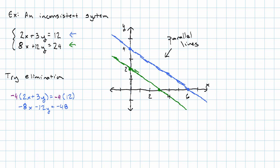So, our system is now negative 8x minus 12y is negative 48. Positive 8x plus 12y is 24. I bet you can see what's going to happen here.